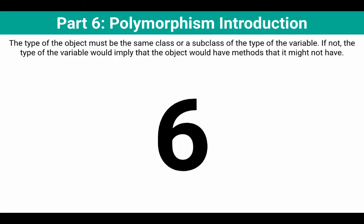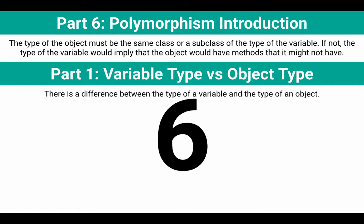Here in part six, we're going to do a polymorphism introduction. The type of the object must be the same class or a subclass of the type of the variable. If not, the type of the variable would imply that the object would have methods that it might not have. This might not make sense yet, but I want to remind you of part one where we looked at the fact that there's a difference between the type of the variable and the type of the object.